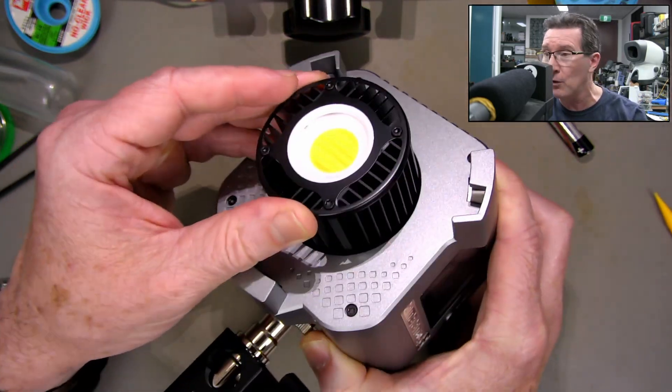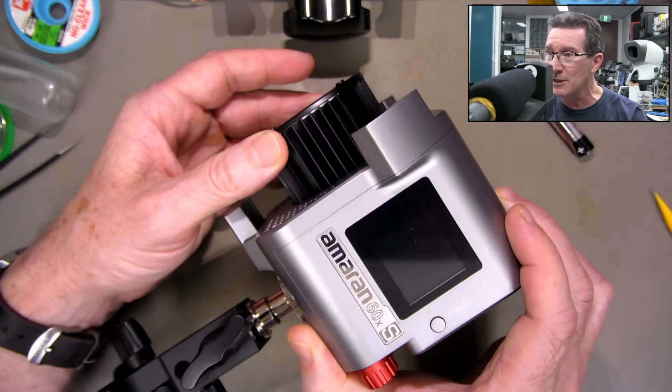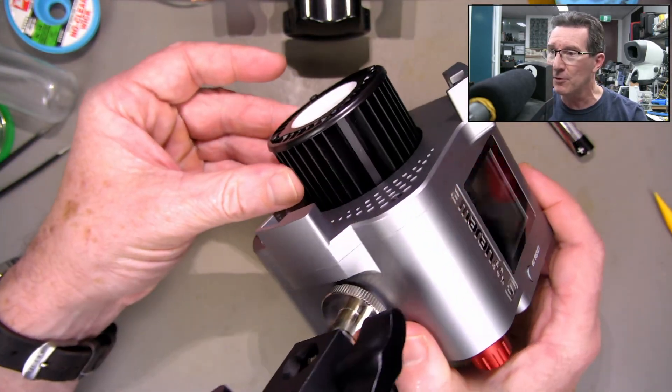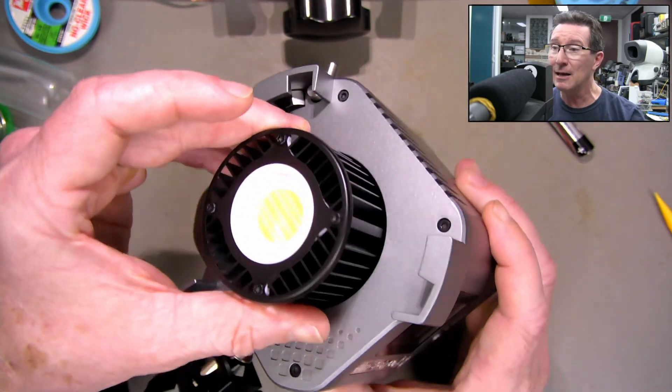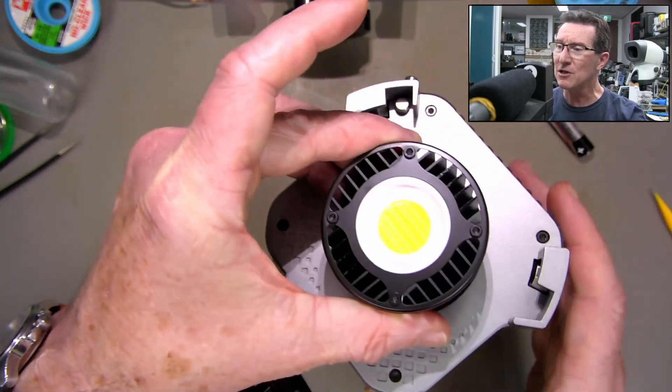But anyway, giant COB, which is a chip on board, basically LED array up here. So that's what we're going to take a look at, hopefully, with the microscope here. And a massive heatsink, and the fan just blows directly over the fins like that. Very nice.